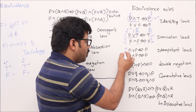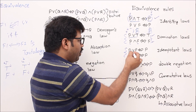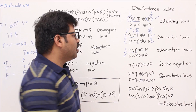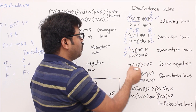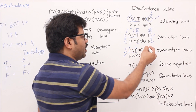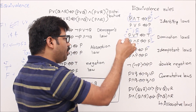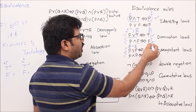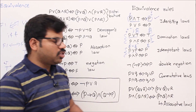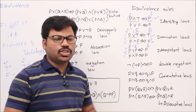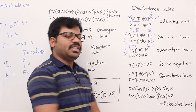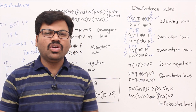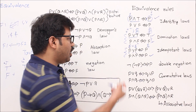Now come to idempotent law. Whenever you write p∨p∨p so many times, that is exactly equivalent to p. Since when one p is true all p's will be true, and when one p is false, false∨false∨false everything becomes false. By observing left and right side values for all cases, you realize p∨p ≡ p. Similarly, p∧p ≡ p. These two are idempotent rules.